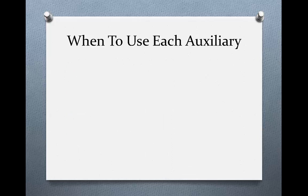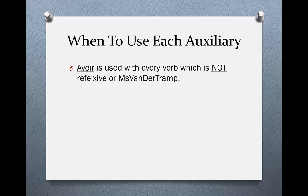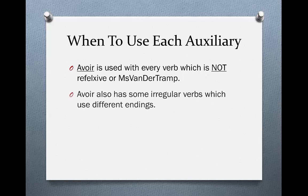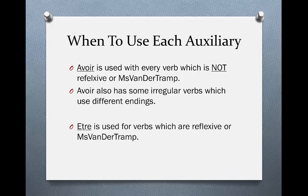So, when are we going to use each auxiliary verb? Avoir is used for every single verb which is not reflexive and is not a Miss van der Tramp verb. Avoir also has some irregular verbs which use different endings. Être is used for verbs which are reflexive or are Miss van der Tramp verbs.